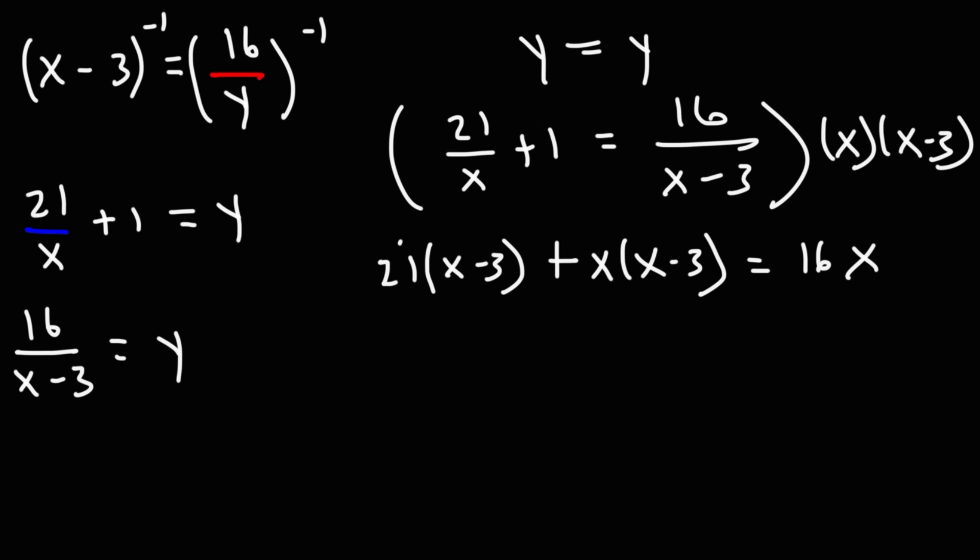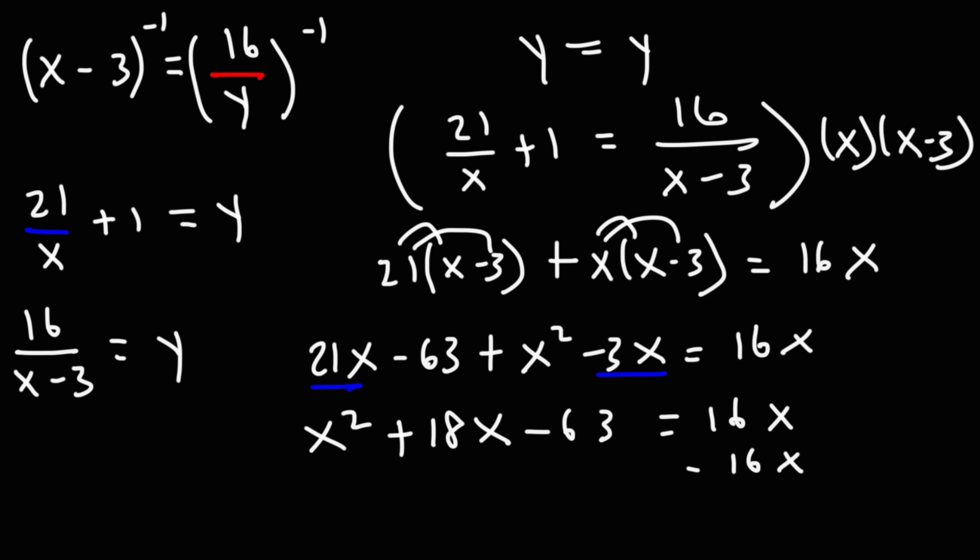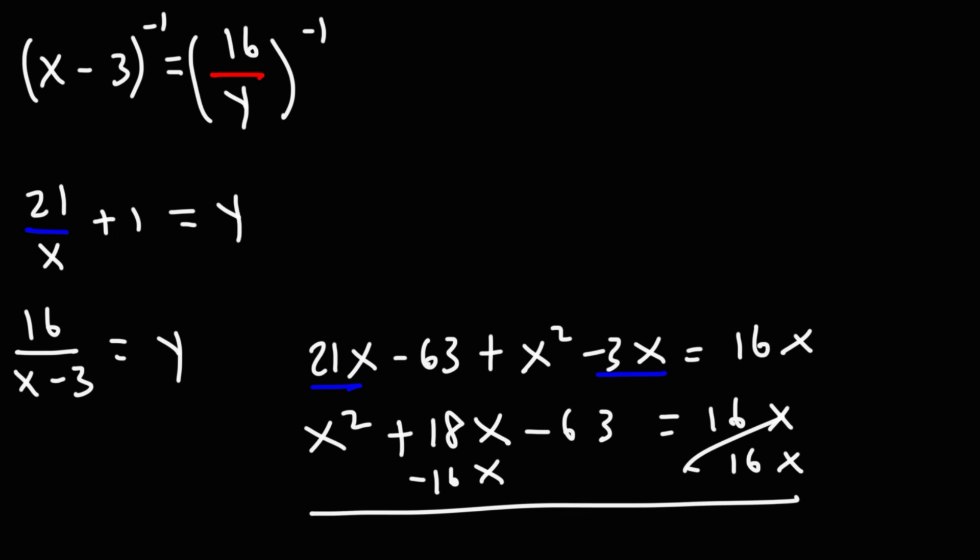So now let's distribute. So I'm going to have 21x minus 63, and then plus x squared, minus 3x, equal to 16x. So this is x squared. 21x minus 3x is positive 18x, and then we have negative 63. Now I'm going to subtract both sides by 16x.